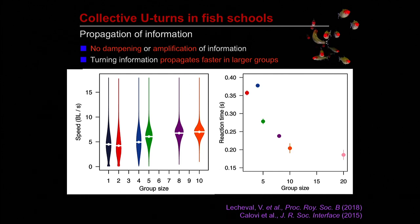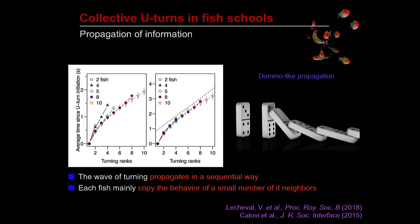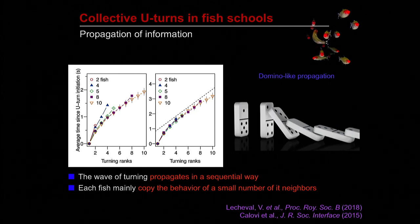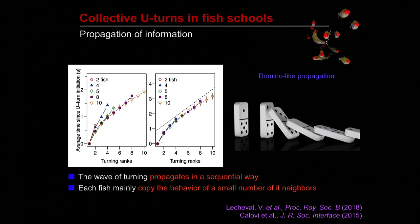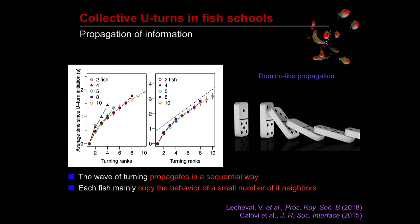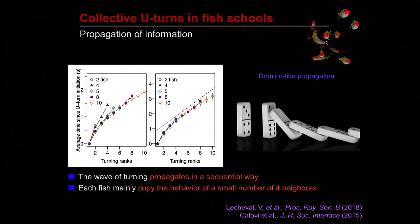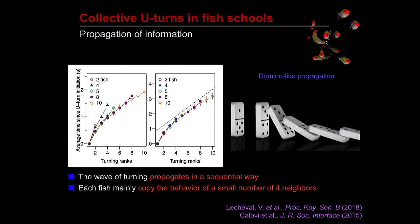Moreover, on average, the turning information propagates faster in larger groups, and this is a consequence of the increase in swimming speed with group size, which requires individuals to react faster. The reaction time of individuals decreases with group size. If we normalize the time interval between successive turns by the average speed of the group, all curves collapse onto the same curve, suggesting that the shorter reaction time observed in larger groups is mostly due to their faster swimming speed.